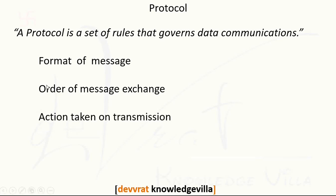The next thing is action taken on transmission. This means whenever we are going to start the transmission, whenever we are going to stop the transmission — for example, suppose any higher-priority data arrives. We will allow that data to communicate first and keep lower-priority data at the back. This is all about the action taken on transmission, including some security parameters.